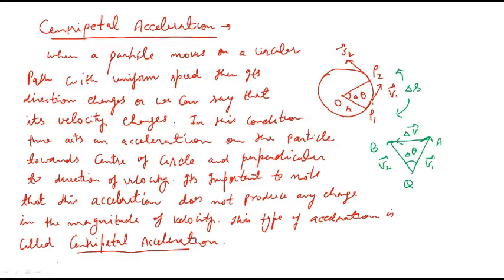This acceleration is perpendicular to the direction of the velocity. So this type of acceleration is called the centripetal acceleration. It is also important to note that the centripetal acceleration does not produce any change in the magnitude of the velocity. It means that the magnitude of velocity v1 and the magnitude of velocity v2 are the same.